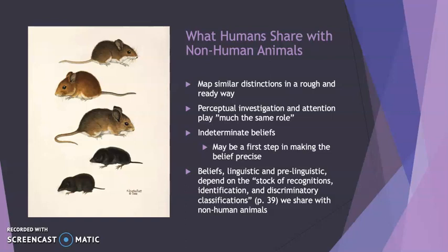What do humans share with non-human animals? We can map similar distinctions in a rough-and-ready way. For example, a cat chases a shrew, eats it, and never eats a shrew again because it tastes terrible, whereas the mouse tastes great. The cat makes a rough-and-ready distinction we can map similarly to distinctions human beings make. There is also perceptual investigation and attention that play much the same role in many non-human animals and human animals — whether mice, dolphins, or dogs.